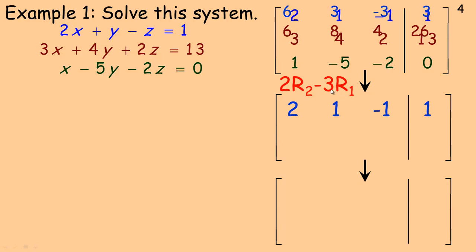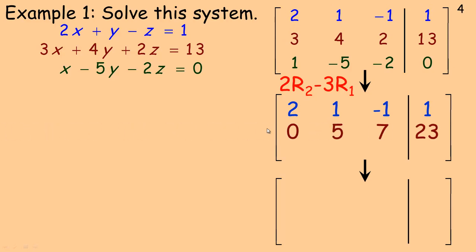I'm going to replace row 2 with those differences — row 2 numbers minus row 1 numbers. 6 minus 6 is 0. 8 minus 3 is 5. 4 take away negative 3 is 7 — same as 4 plus 3. And 26 minus 3 is 23. So the new row 2 is 0, 5, 7, 23.